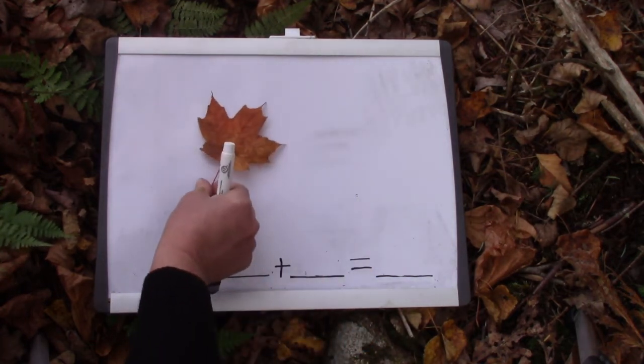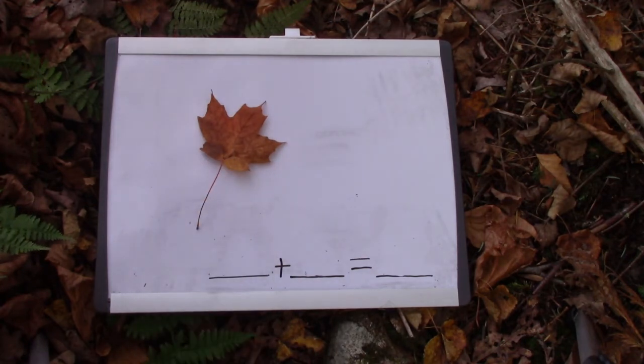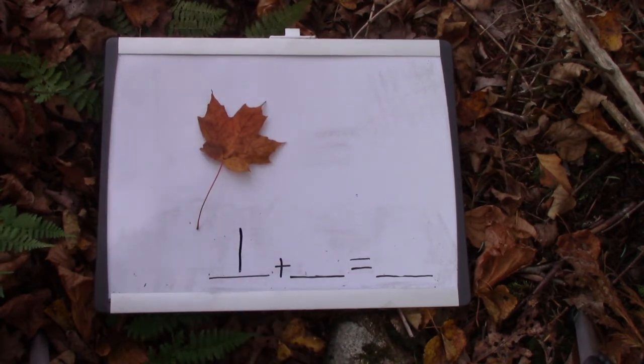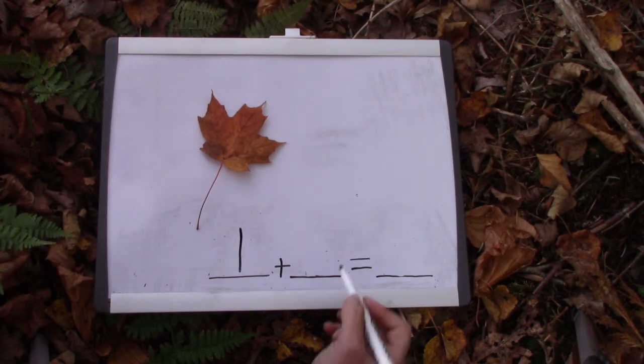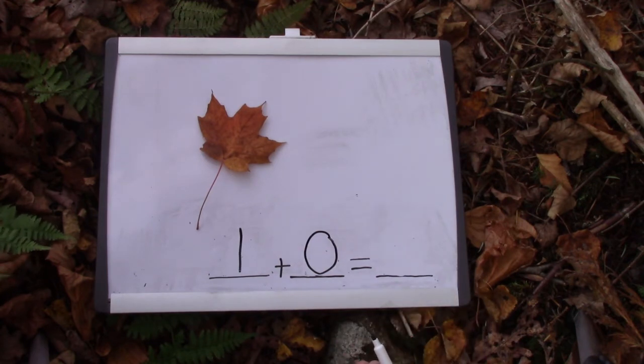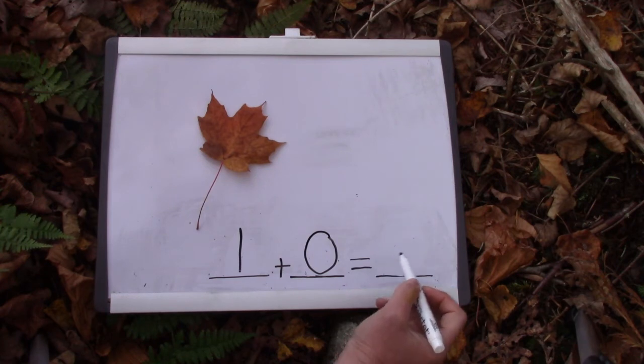Today is such a nice fall day. And I have one leaf. I'm going to write a one on my number sentence. And guess how many more leaves I have? Zero more! There aren't any more. One plus zero equals one.